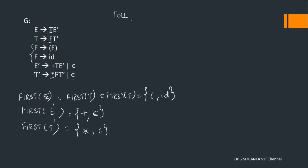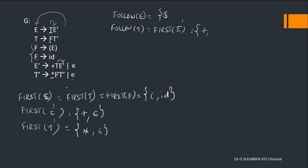Now computing FOLLOW. FOLLOW of E: E is the start symbol, so include dollar. FOLLOW of T: T appears in two places, both followed by E'. So include FIRST of E' = {+, ε}. Since ε is in FIRST of E', also add FOLLOW of E. So FOLLOW of T = {+, $}. FOLLOW of F: F appears in two places, both followed by T'. FIRST of T' = {*, ε}. Since ε is in FIRST of T', also add FOLLOW of T. So FOLLOW of F = {*, +, $}.